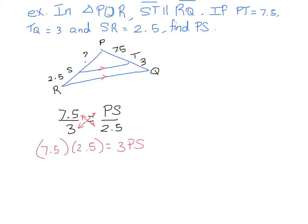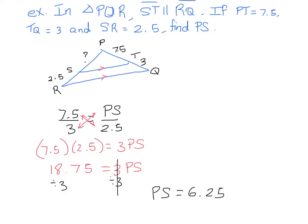When you multiply 7.5 by 2.5 you get 18.75, which is equal to 3 times PS. We want to isolate that unknown, so we divide both sides by 3, and we get that PS is equal to 6.25. And that's how the triangle proportionality theorem works.